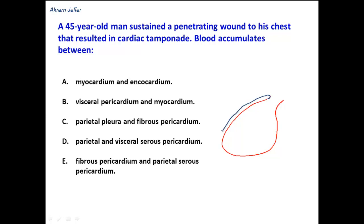This is the parietal layer of the serous pericardium. The fibrous pericardium is a thick layer and is the outermost part of the pericardium. The fibrous pericardium is directly related to the outer aspect of the parietal pericardium, with no space in between them. So this layer from one side is the fibrous pericardium, and from the inner side it is the parietal layer of the serous pericardium — with no space in between them.